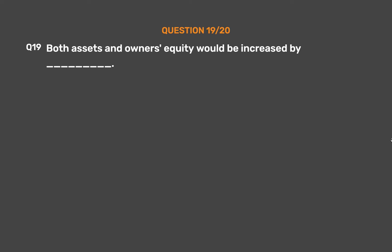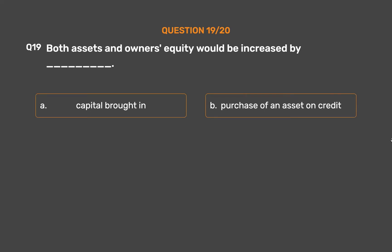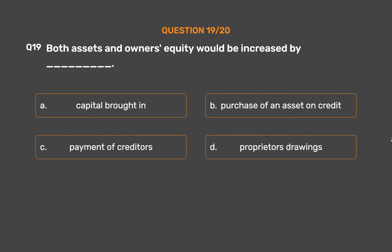Question number nineteen: both assets and owner's equity would be increased by — Option A: capital brought in. Option B: purchase of an asset on credit. Option C: payment of creditors. Option D: proprietor's drawings.